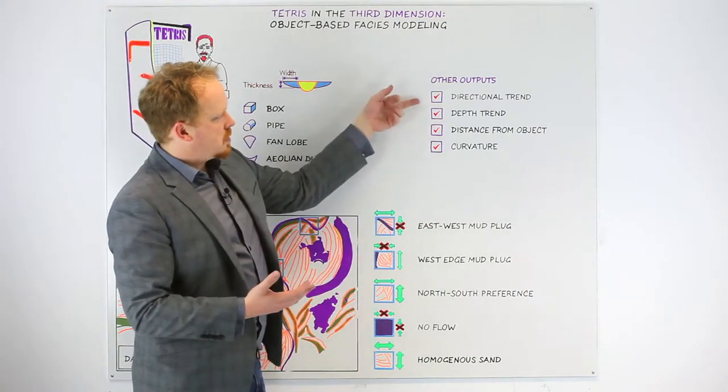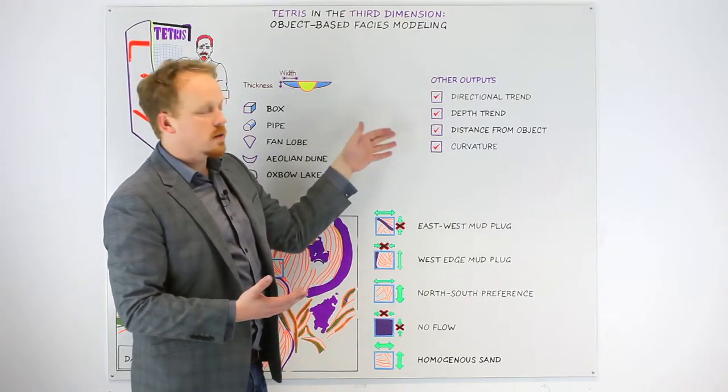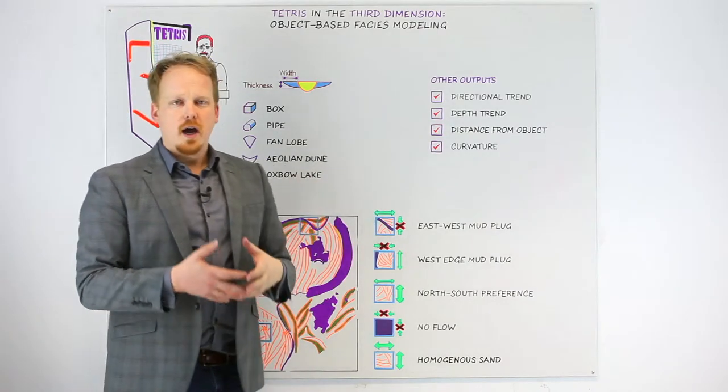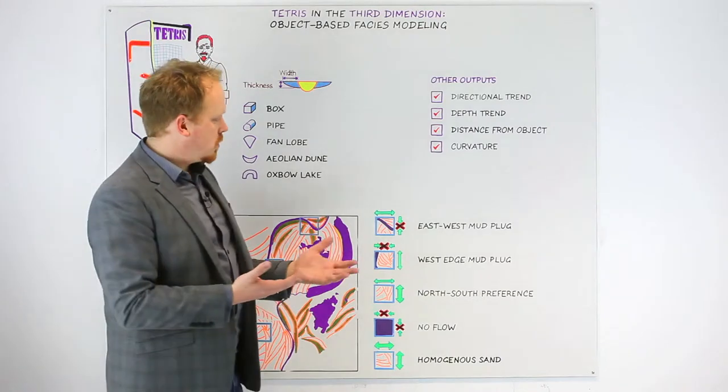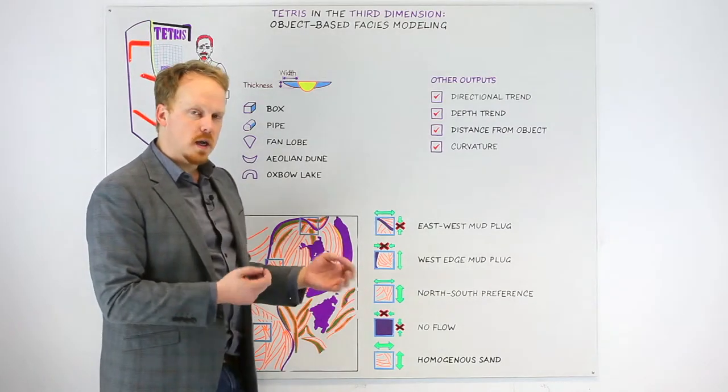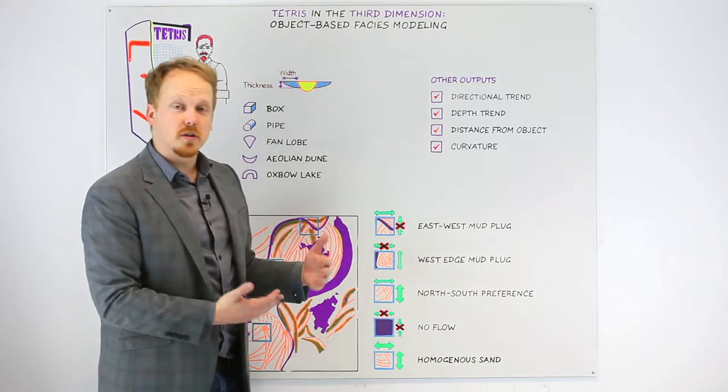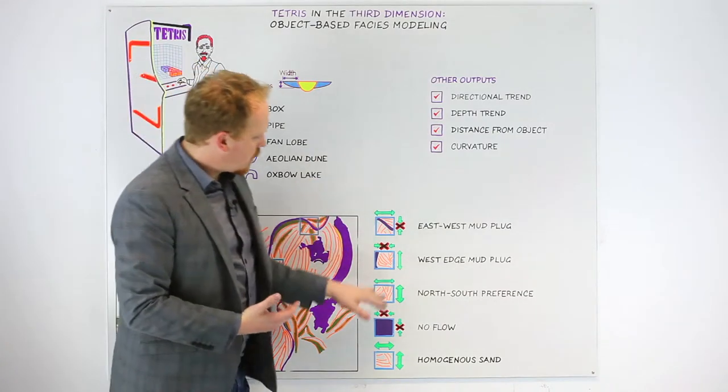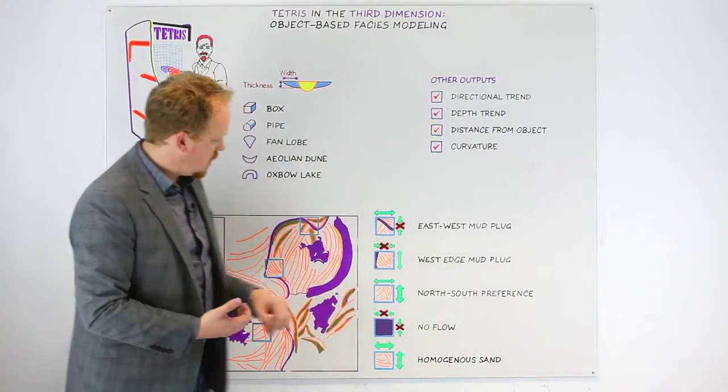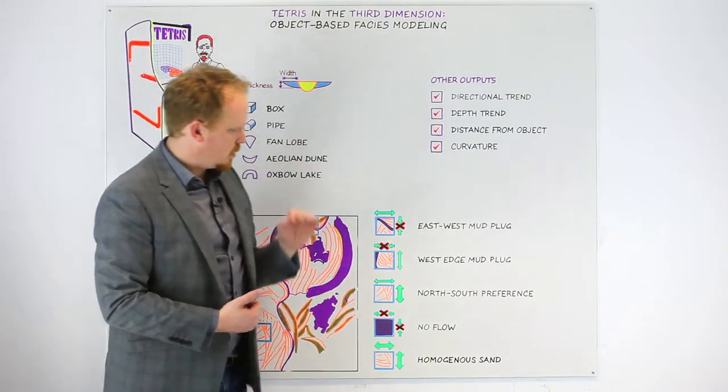In particular, directional trends, depth trends, and distance and curvature are properties that you can represent out of any one of your objects, and you can use this when you come to do your correlations for porosity and permeability. So how could I represent perhaps this feature here using those outputs?